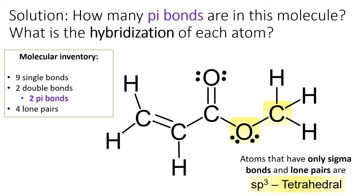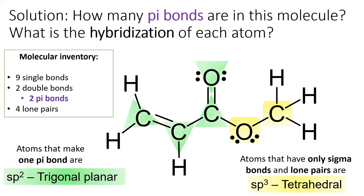For oxygen and carbon, the hybridization options are sp, sp2, and sp3. Atoms with only lone pairs and single bonds — such as the two highlighted in yellow — are sp3 hybridized with tetrahedral electronic geometry. If an atom is making one pi bond, it must reserve a p orbital for that pi bond, so the remaining sigma bonds and lone pairs reside in sp2 hybrid orbitals. If an atom were making two pi bonds, it would be sp hybridized.